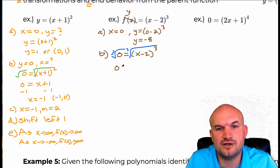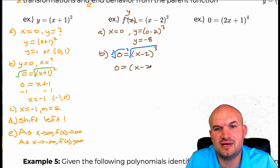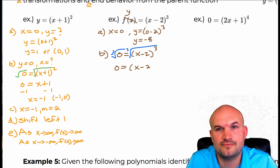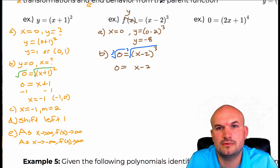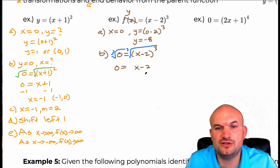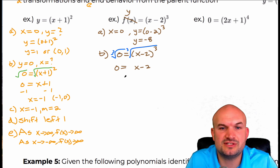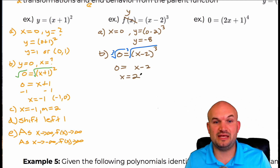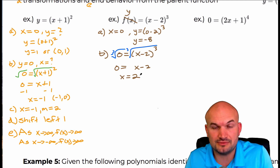We're going to get zero equals x minus two. Add two to the other side and you can see x is equal to two. That is my zero.